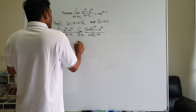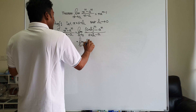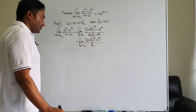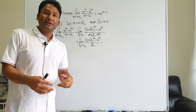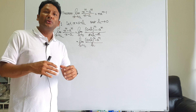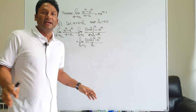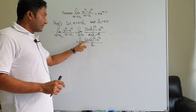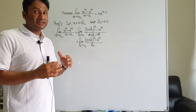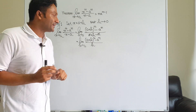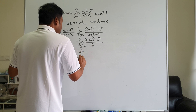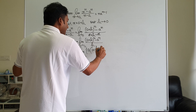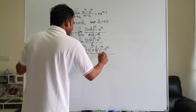This is the method of substitution. Limit h tends to 0 of (a + h) to the power n minus a to the power n, divided by h. We factor out a to the power n, so the expression becomes: limit h tends to 0 of a to the power n into (1 plus h by a) to the power n minus a to the power n, divided by h.